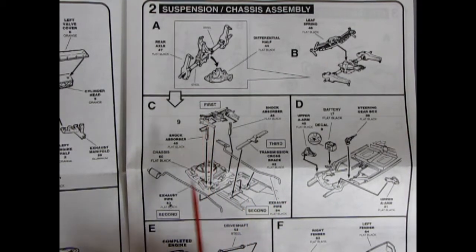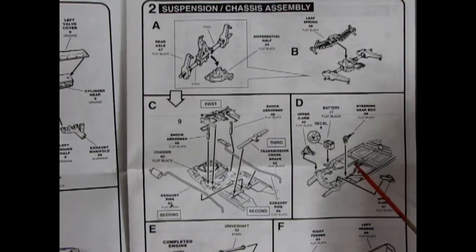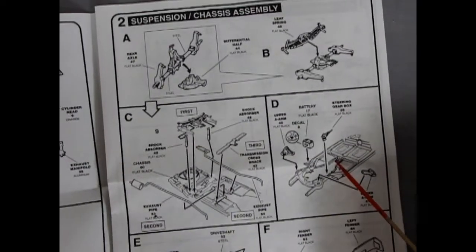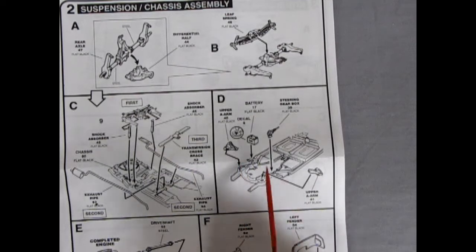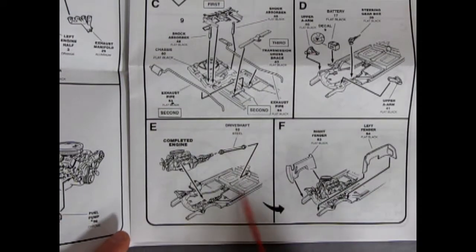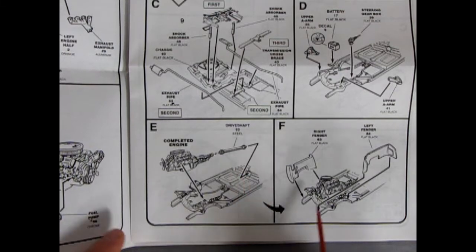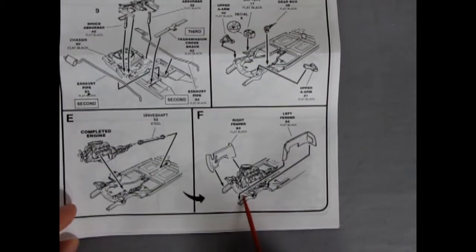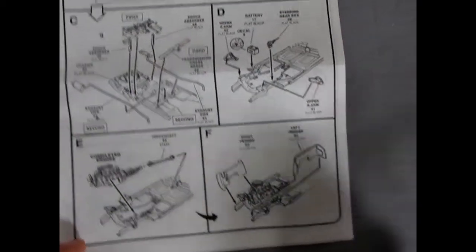And then, we've got this panel over here, which is showing our upper A-arms going in with the battery and the steering box onto the chassis. The completed engine dropping into the chassis, as well as our driveshaft here. And then, our fenders are separate. The inner fenders right and left.